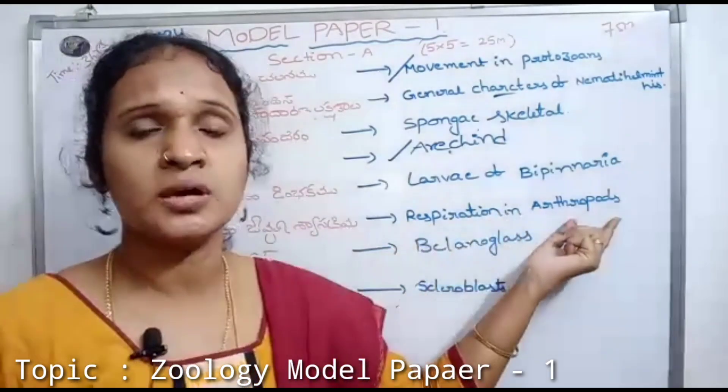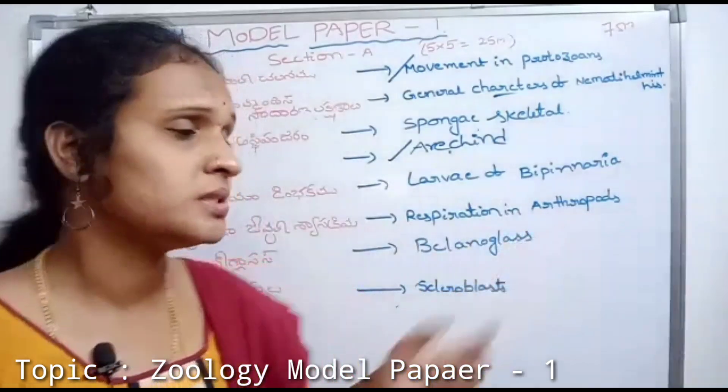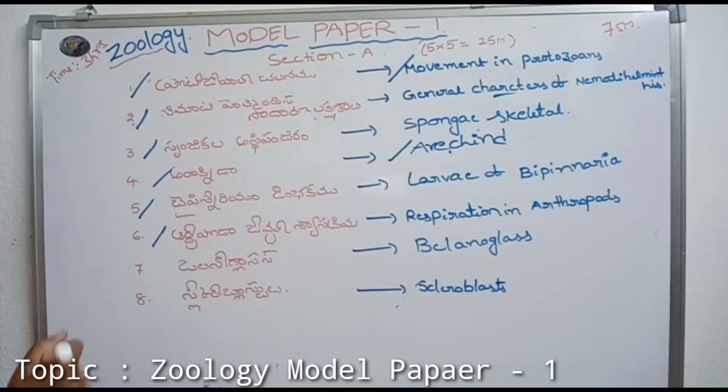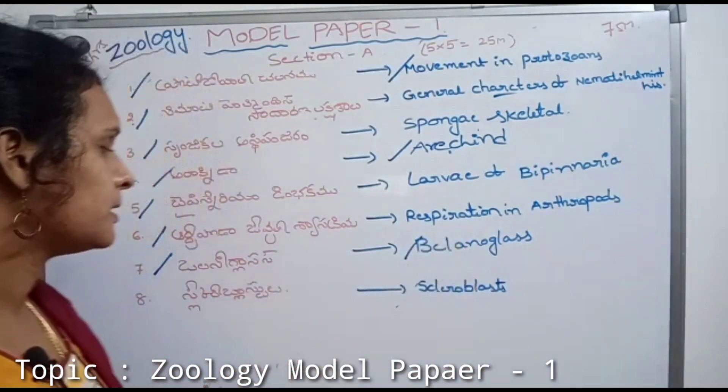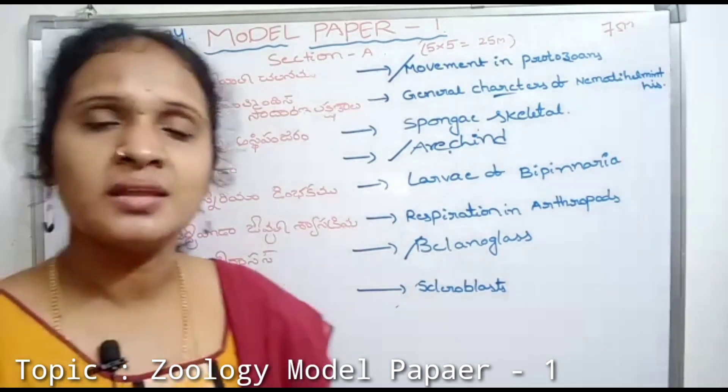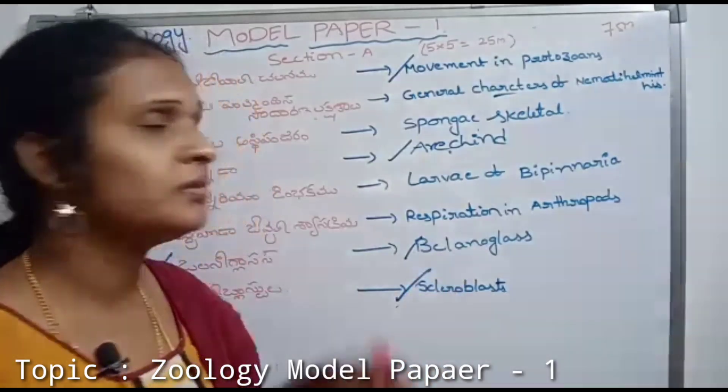In English, Belonoglossus. Scleroblast - explain the form of scleroblast.